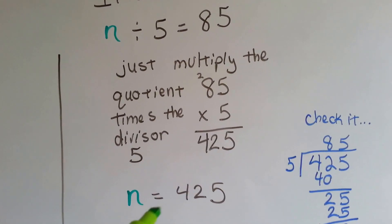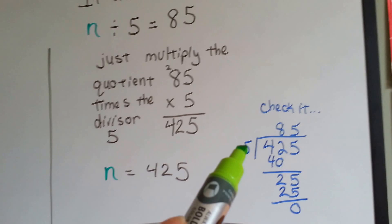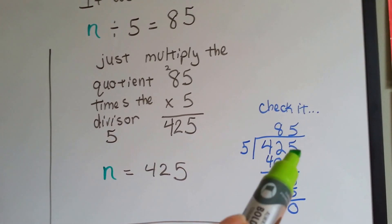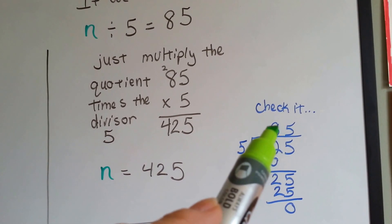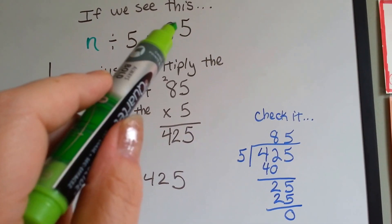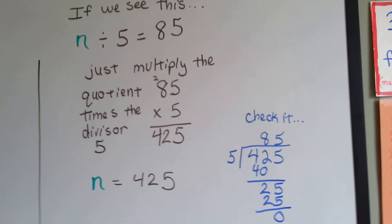And if we want to check that, all we have to do is see how many times 5 goes into 425. If it goes in with a quotient of 85, we know we did it correctly.